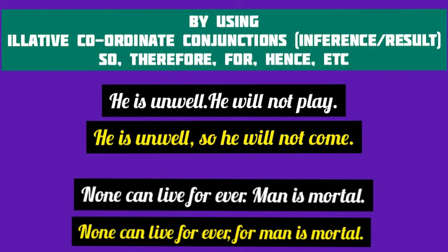Finally, we have elative conjunctions to combine simple sentences into a compound sentence. So, therefore, for, hence are some elative coordinate conjunctions. 'He is unwell' and 'He will not play' are two separate simple sentences. The elative conjunction 'so' is used to combine them: 'He is unwell, so he will not come.' 'He will not come' is the inference or consequence here.